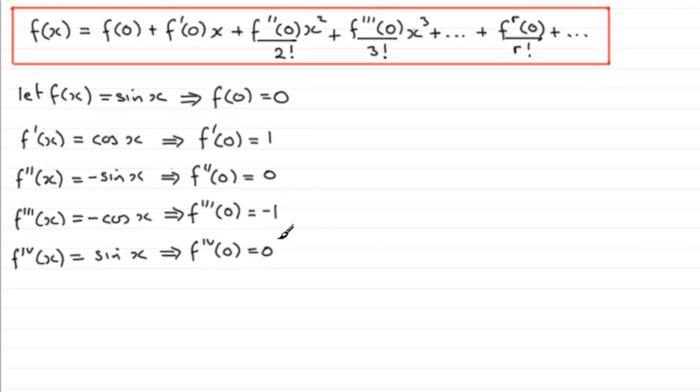That means if we substitute all our values into Maclaurin series up here, what we generate is for the first term, f(0), which disappears because it was 0, and then we just get one x or x. Then when we carry on this substitution, we find we get minus x cubed over 3 factorial, and then plus x to the power 5 over 5 factorial, and so on.